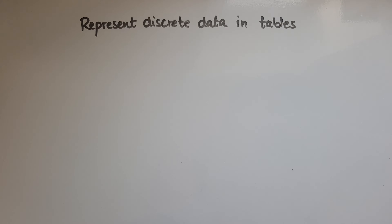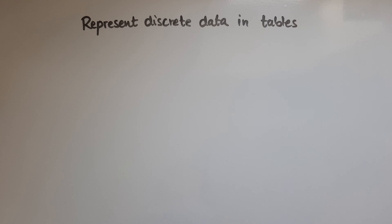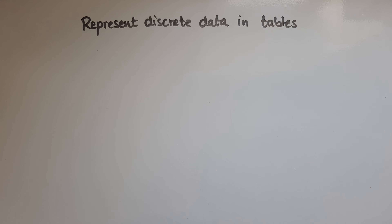In this video we'll learn to represent discrete data in tables. Discrete data is represented using whole numbers, not decimals or fractions. The type of data we'd represent using tables varies a lot — we could sort different colors of cubes, represent migration data for a country, or represent a wide range of information using tables.